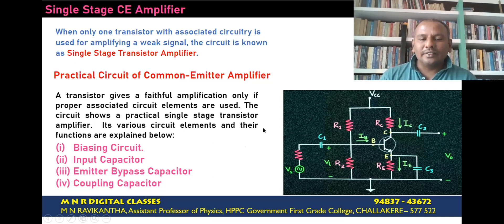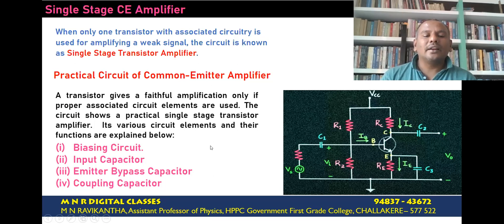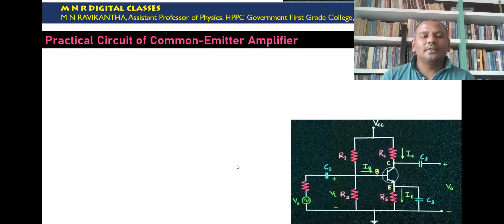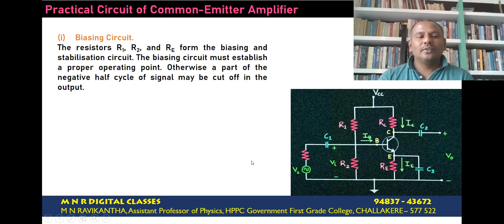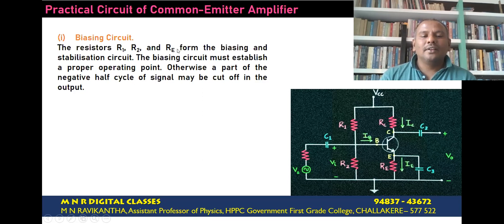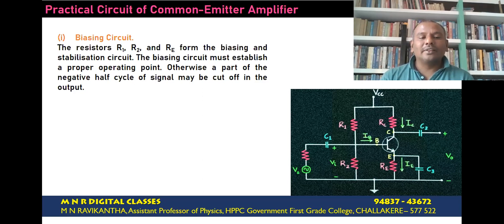RC is the collector load resistance. This is the design of the practical CE amplifier. The first circuit component is the biasing circuit, which consists of resistors R1 and R2 along with RE. R1 and R2 form the biasing network, and RE forms the stabilizing circuit.